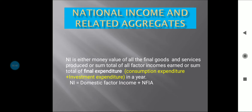First we have to know what national income is. National income is either the money value of all final goods and services produced, or the sum total of all factor incomes, or the sum total of final expenditure — that is consumption expenditure plus investment expenditure — in a year. So NI is equal to domestic factor income plus NFIA. NFIA stands for net factor income from abroad, which will be explained in further slides.